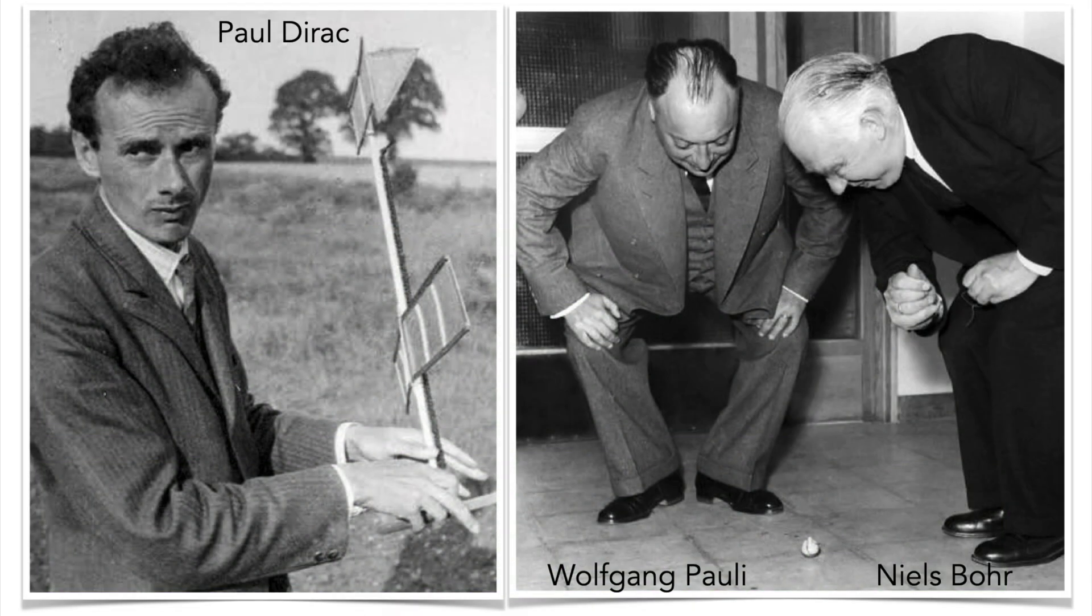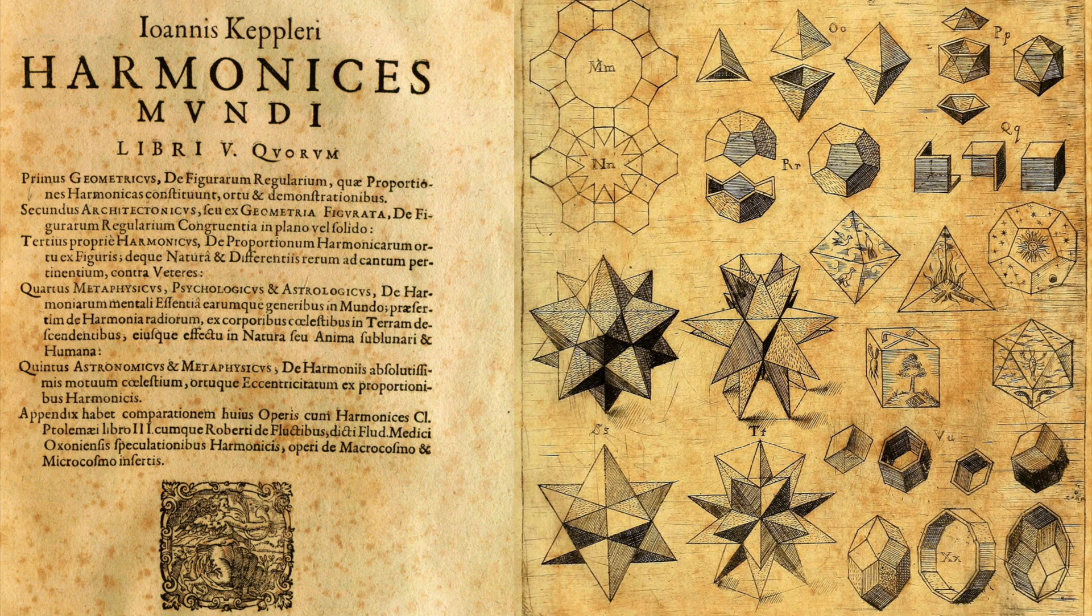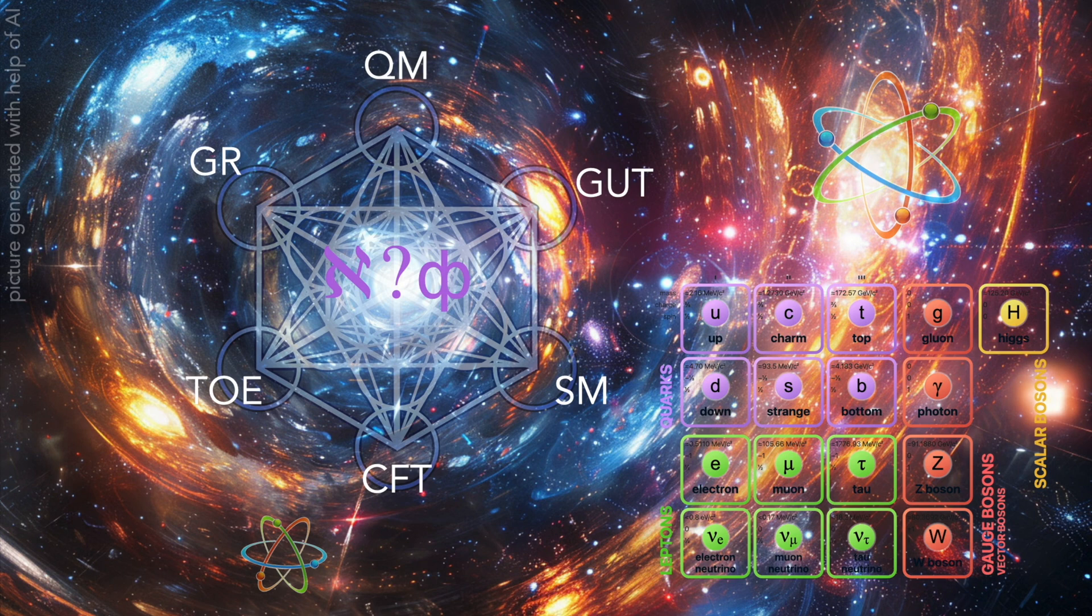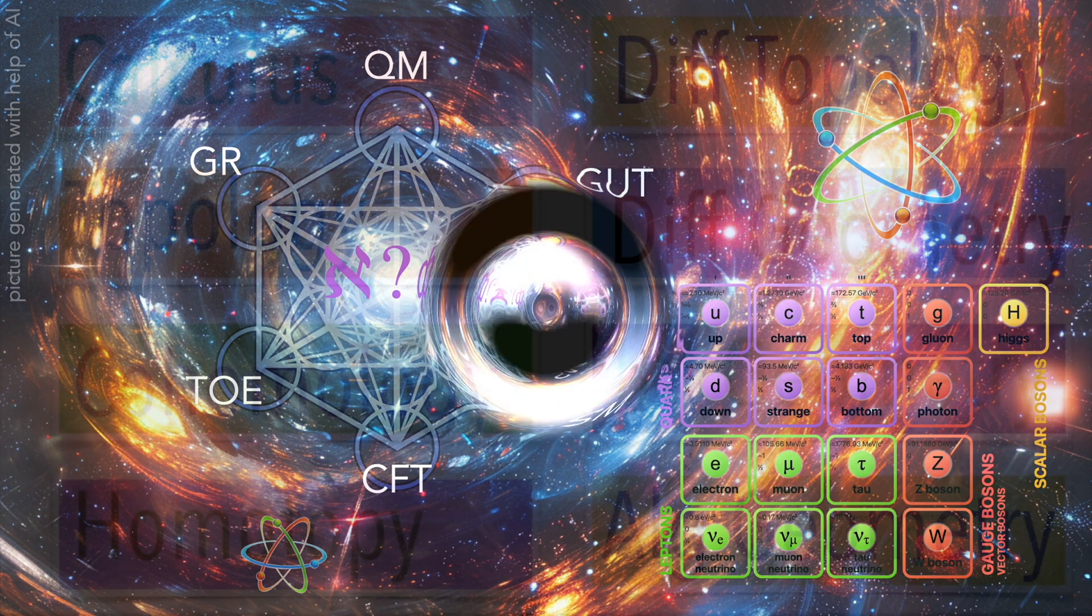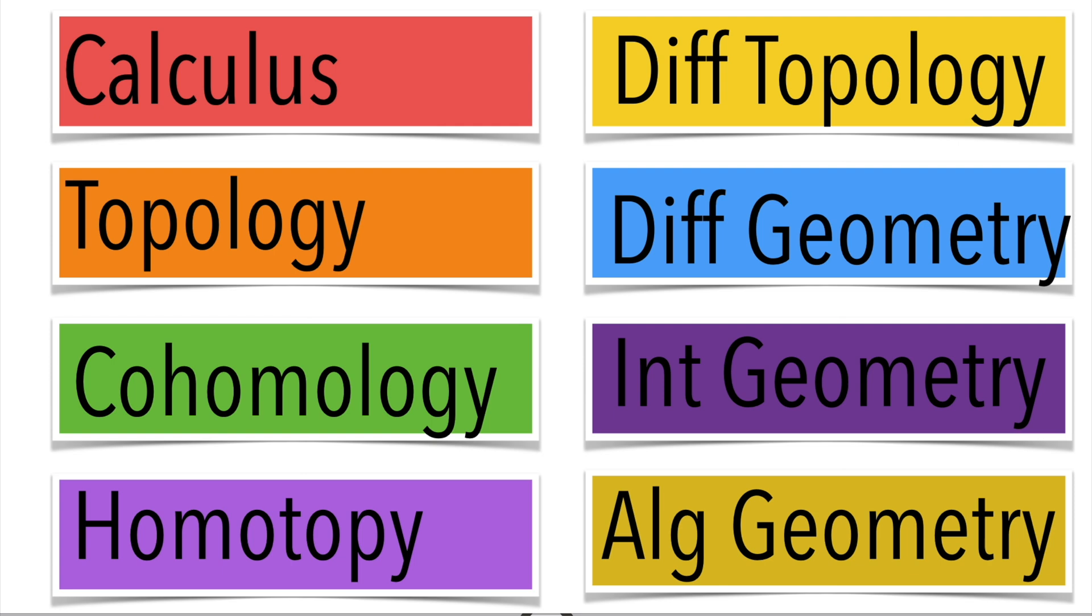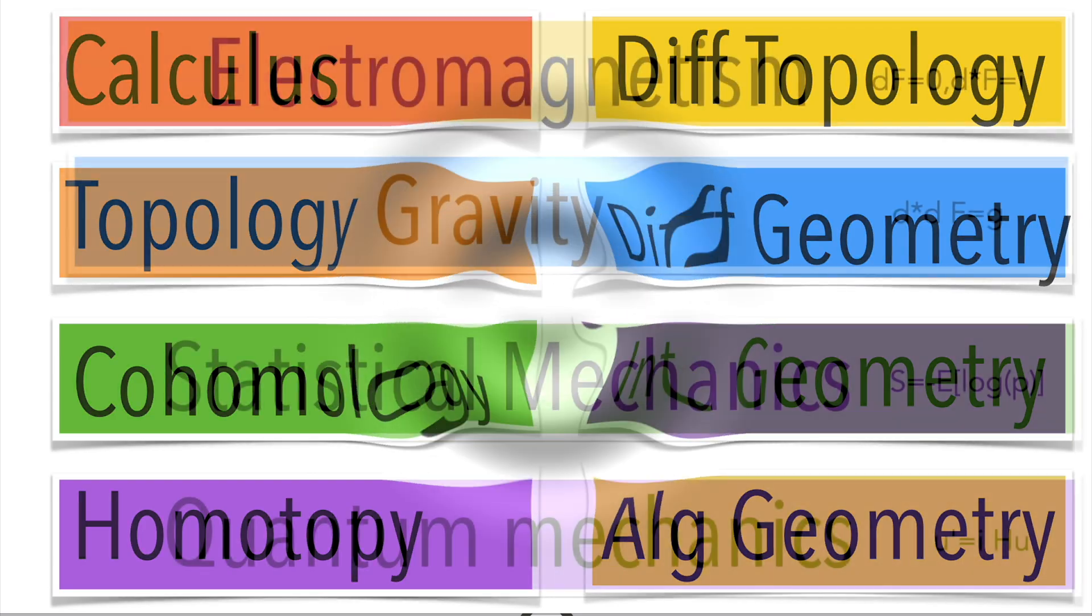Dirac, Pauli and Bohr liked simplicity and also having fun like one sees on these pictures. Also Kepler played around with simple explanation approaches to the universe. Today we are in an interesting phase of physics where we do not know how a theory of everything looks like or a grand unified theory will be. As mathematicians we have lots of tools available.